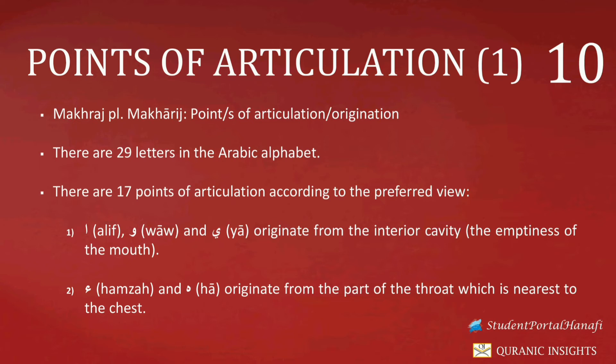We now move on to the second point of articulation. Looking at the second, third, and fourth points of articulation together: from each, two letters originate, giving us six letters in total. These six letters are referred to as Huruf Halqiyah — Halqiyah refers to the throat. Due to these six letters originating from the throat, they are known as the letters of the throat.